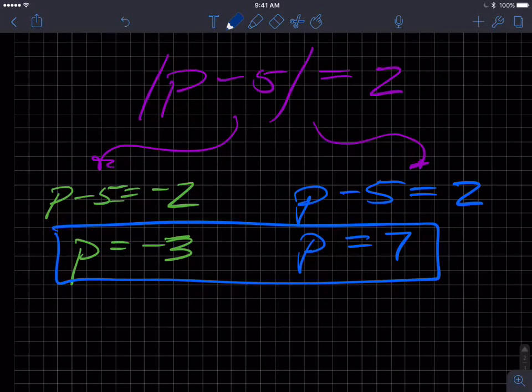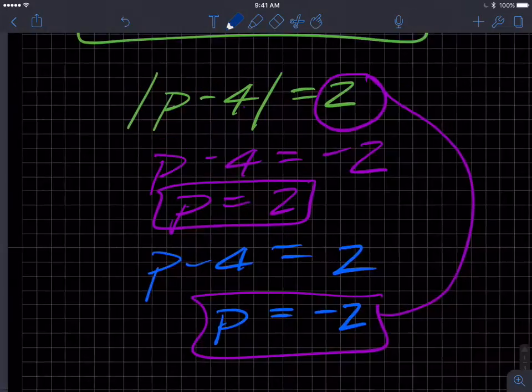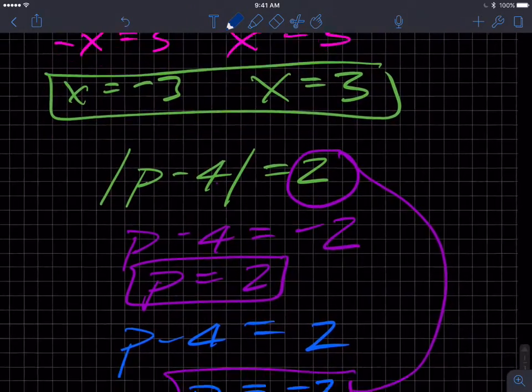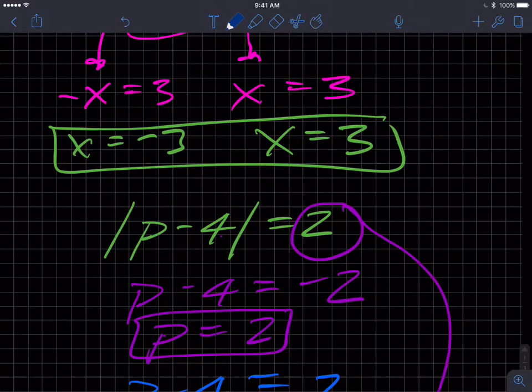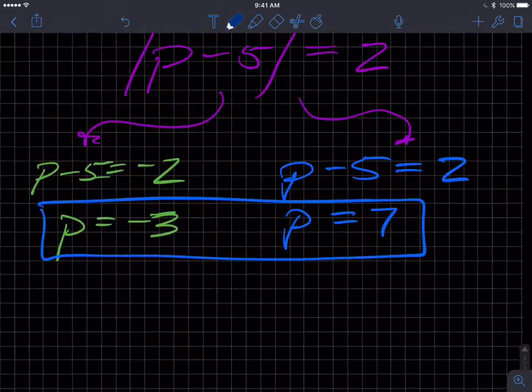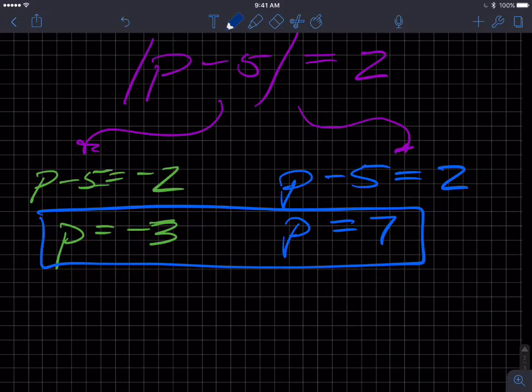So again, that 2 and negative 2 up here does not indicate in any way that the solution is always going to be a positive and negative of that value, because it looks like that pattern shows up, but that's not true. We need to do the work. We're going to add 5 to both sides and get negative 3, we're going to add 5 to both sides and we'll get 7.